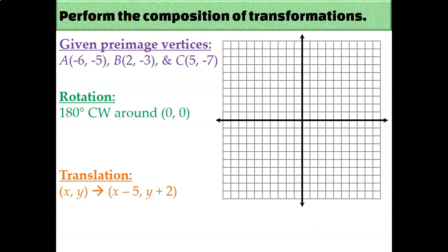We're given the pre-image vertices A, B, and C, so let's go ahead and plot those on our graph. We're supposed to perform two transformations: we're going to rotate 180 degrees clockwise around the origin, and then we're going to translate using the rule x minus 5, y plus 2. It's important to understand that we'll be rotating the original pre-image. We're going to do whatever answer we get — that's what we're going to translate. You do not translate the original pre-image; you translate whatever the result of the first transformation was.